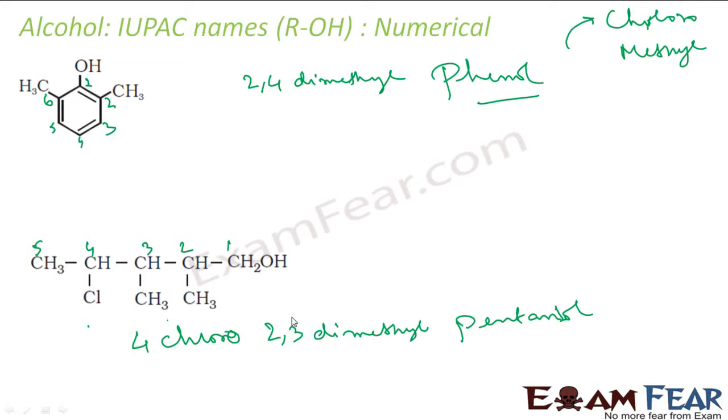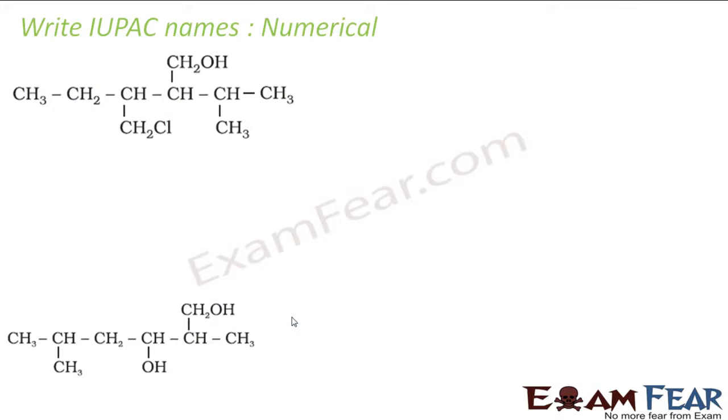Let's take a few more examples. The OH should be in the chain because it's the primary group. Let me find the biggest chain: 1, 2, 3, 4, 5.